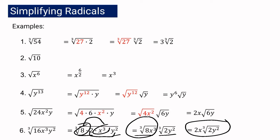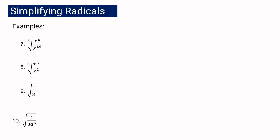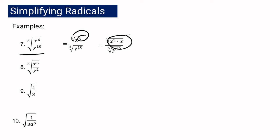Let us proceed with more examples — numbers 7, 8, 9, and 10 — wherein our radicand is expressed as a fraction. Based on our condition, there should be no fraction inside the radical sign. If we have the 5th root of x to the 6th over y to the 10th, to simplify we follow law of radicals number 3 and write it as the 5th root of x to the 6th over the 5th root of y to the 10th. Since 6 is not divisible by 5, we factor x to the 6th as x to the 5th multiplied by x. We just copy the denominator because 10 is divisible by 5.